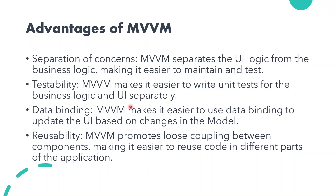MVVM makes it easier to use data binding to update the UI based on changes in the Model. The last advantage is reusability — MVVM promotes loose coupling between components, making it easier to reuse code in different parts of the application. For example, if we create a play class in a music player, we can reuse it for any component of the Android application.